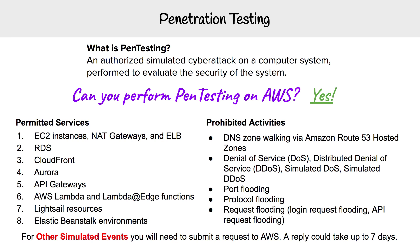There are eight services you are permitted to do pen testing on. You have EC2 instances, NAT gateways and ELBs, you have RDS, you have CloudFront, you have Aurora, and you have API Gateway.